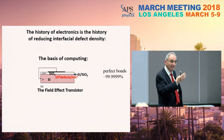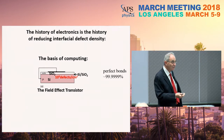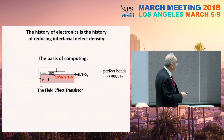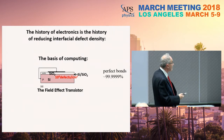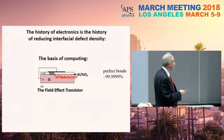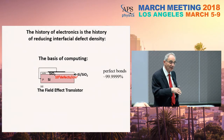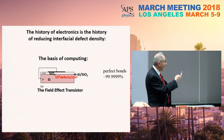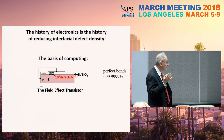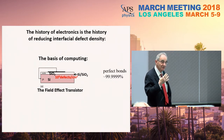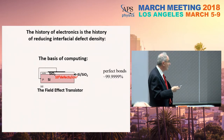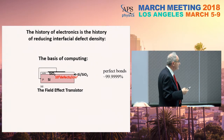Germanium was the basis of electronics for many years, and as soon as this silicon oxidation recipe was discovered, silicon became the basis of electronics, and then eventually became the basis of integrated circuits and computing. This little materials science breakthrough is actually a big deal. People who discovered the recipe — like Andrew Grove — went on to become the founders of Intel.